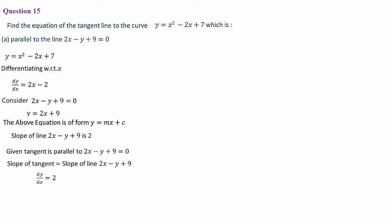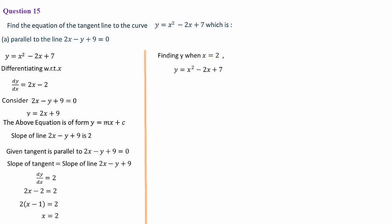From 2x − 2 = 2: taking 2 common gives 2(x − 1) = 2, so x − 1 = 1 and x = 2. To find y, substitute x = 2 into the curve: y = 2² − 2(2) + 7 = 4 − 4 + 7 = 7. So the point is (2, 7).